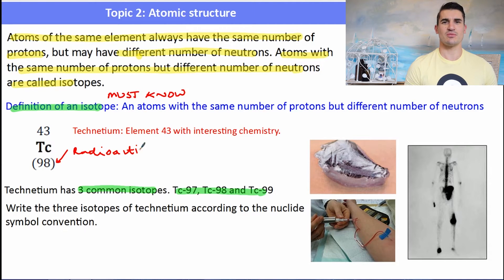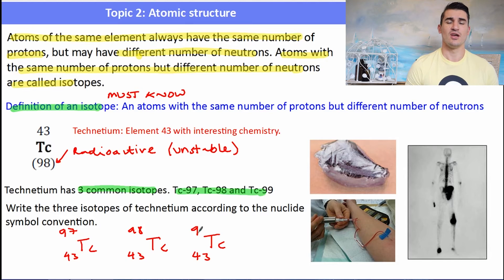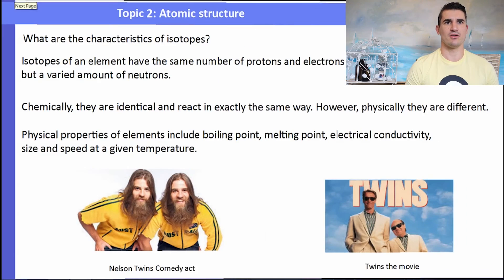If you look on the periodic table, technetium has some brackets around the 98 isotope. That's because it's radioactive and it's also unstable. So it will decay into a stable element. Its 3 different isotopes can be written according to the symbol convention. They're all technetium, so they all have the same number of protons, the same atomic number, 43. The only thing they differ by is the number of neutrons. We have 97, 98 and 99 and they all differ by one neutron. They have the same number of protons, different number of neutrons.